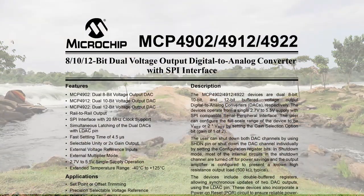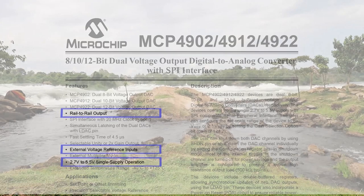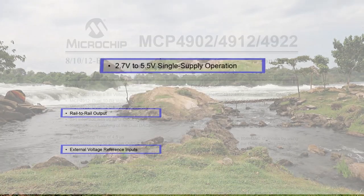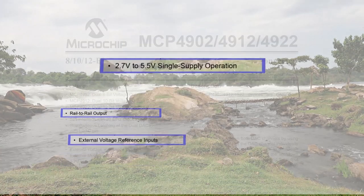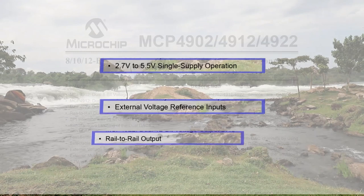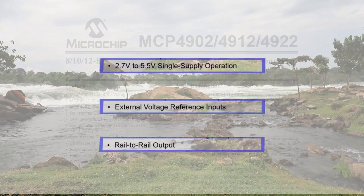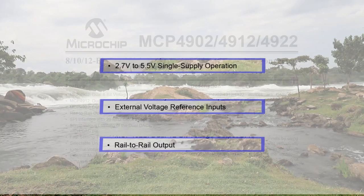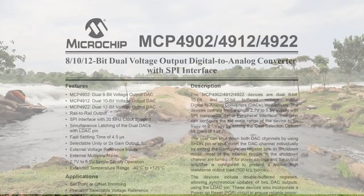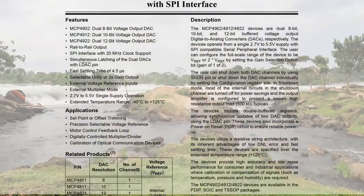Quick points to note from the datasheet: it can operate on a single supply voltage from 2.7 to 5.5 volts, it uses an external voltage reference, and it has rail-to-rail outputs. In theory, if I supply it with 5 volts I should be able to get a voltage range from 0 to 5 volts at the output. This means I can reproduce up to 5 octaves of notes with the volts-per-octave standard.